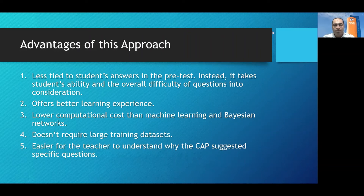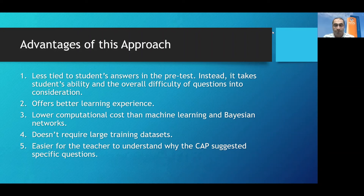Another advantage is that the outcomes from our algorithm are easy for teachers to understand — it's very transparent. You can just look at the Wright map and understand why the algorithm suggested a specific set of questions to a specific student. This is not the case with machine learning, where the outcomes can be very difficult to interpret — it's often unclear why the algorithm suggests a specific set of questions for a specific student.